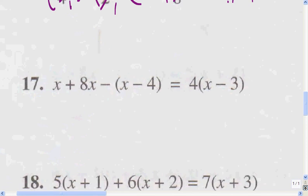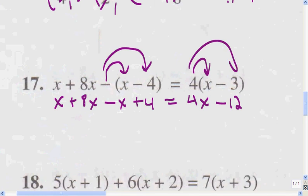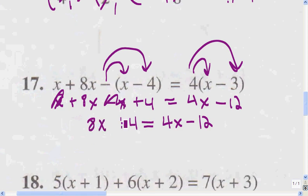Here we don't have to simplify; we've got to get rid of the parentheses. x plus 8x minus x plus 4 equals 4x minus 12. Whenever I have anything in front of the parentheses, I multiply it times everything inside. So that negative times a positive x turns x into negative x, and negative times negative 4 turns 4 into positive 4. I multiplied 4 times x and 4 times 3 to get 4x and negative 12. Now I'm going to combine terms — positive x minus x is 0, so this should really just be 8x plus 4.